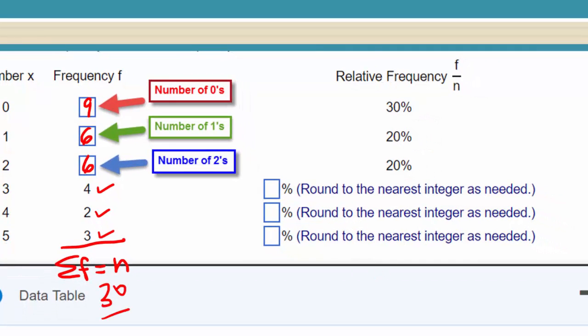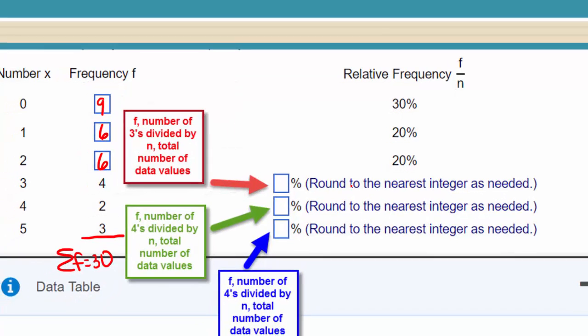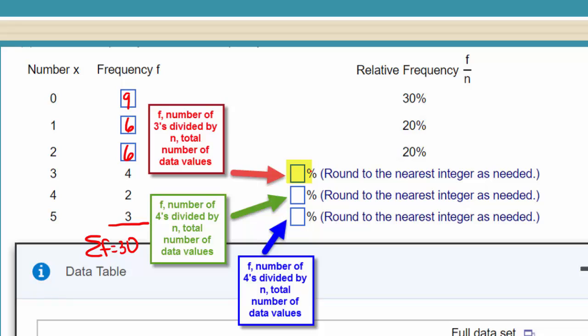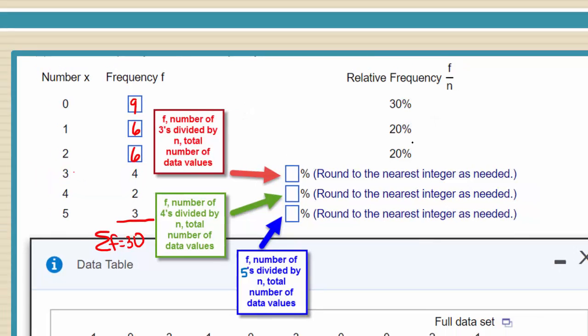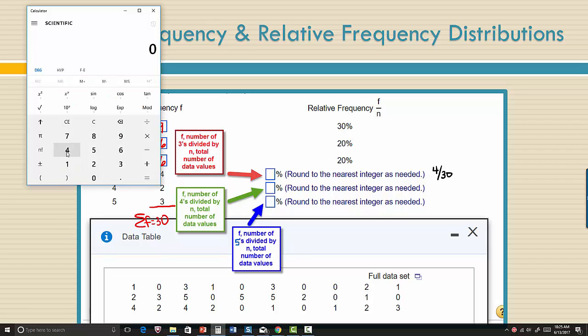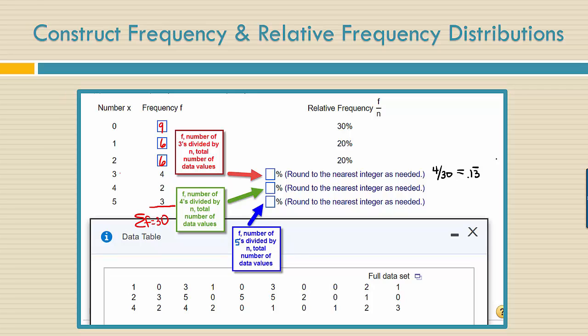All right. So now let's complete the relative frequency distribution. Over here we're missing the percentage of times that the data value three occurs. That's the frequency of threes divided by the total number of data values. The frequency of the data value three is four, so that's four divided by 30. Opening our calculator here, four divided by 30 gives us 0.133 repeating, which if we round to the nearest whole percentage point is going to be 13% approximately. So we would put a 13 here.